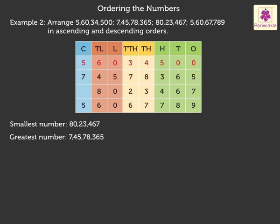Now, compare the remaining numbers. As the first three digits are the same in 5 crore 60,34,500 and 5 crore 60,67,789, 5 crore 60,34,500 is smaller than 5 crore 60,67,789.